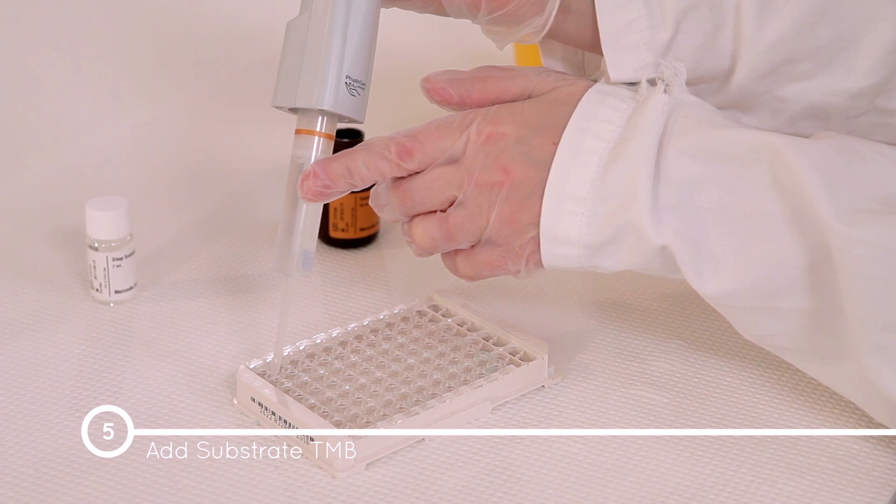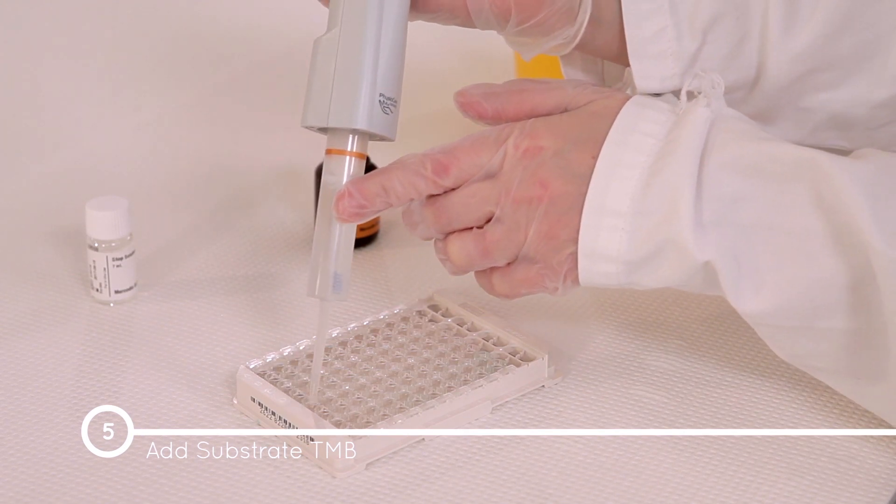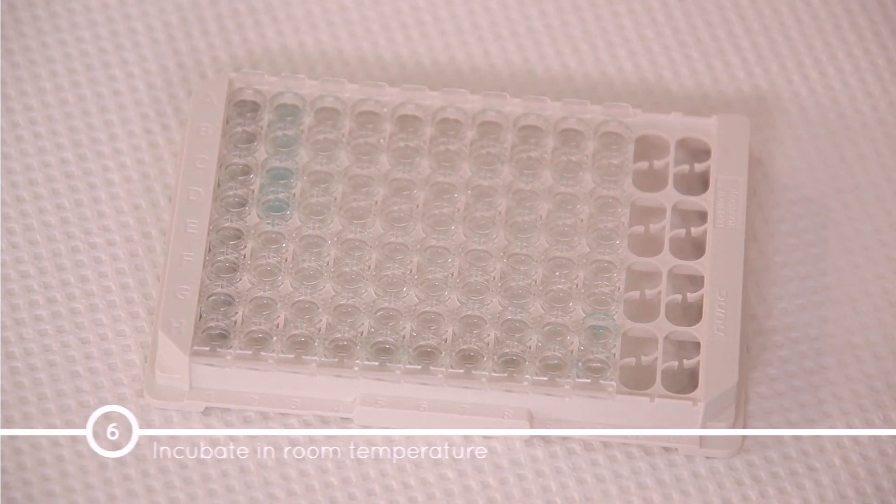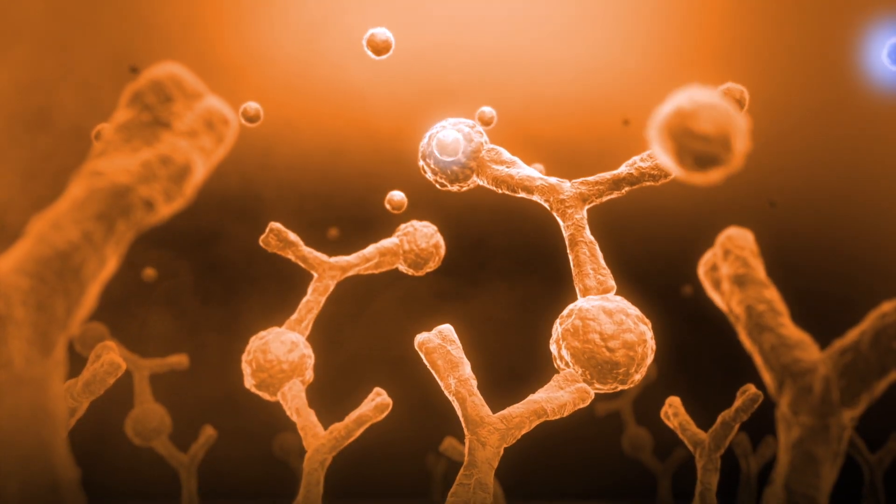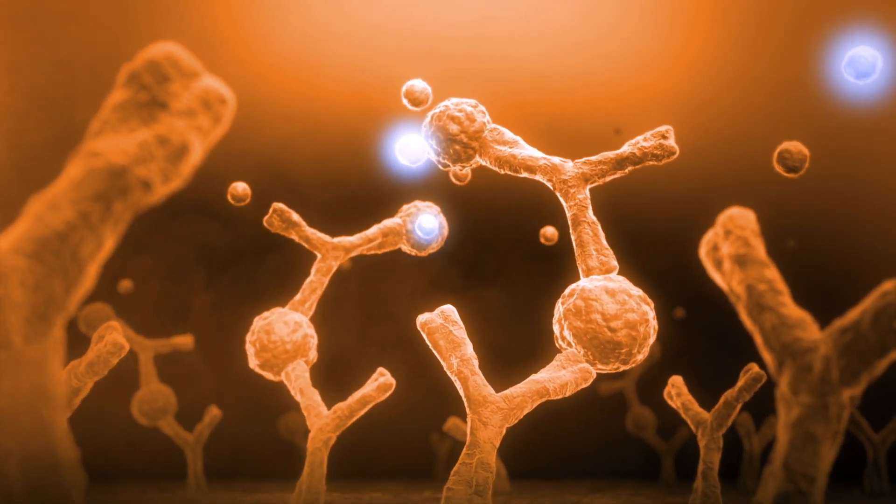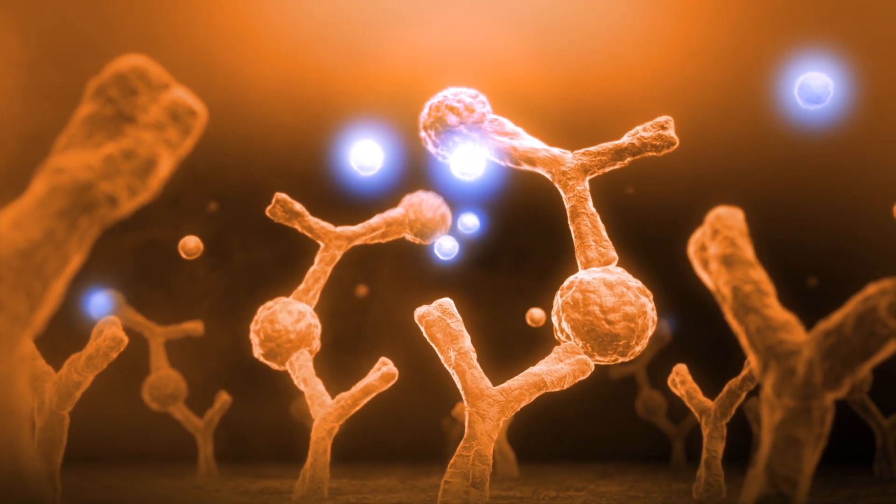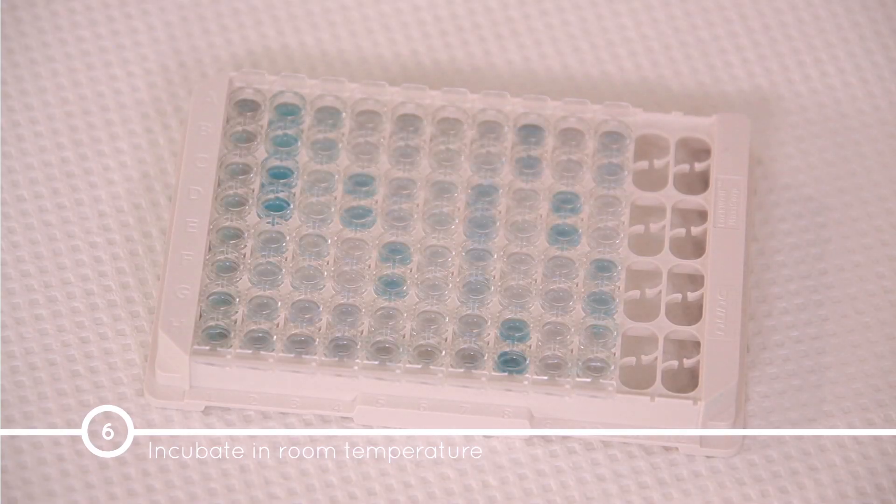Change the pipette tip and add 200 microliters of substrate TMB into each well and incubate on the bench for 15 minutes at room temperature. The substrate is converted by the enzyme to a chromogenic signal and the wells that undergo a reaction will turn blue.